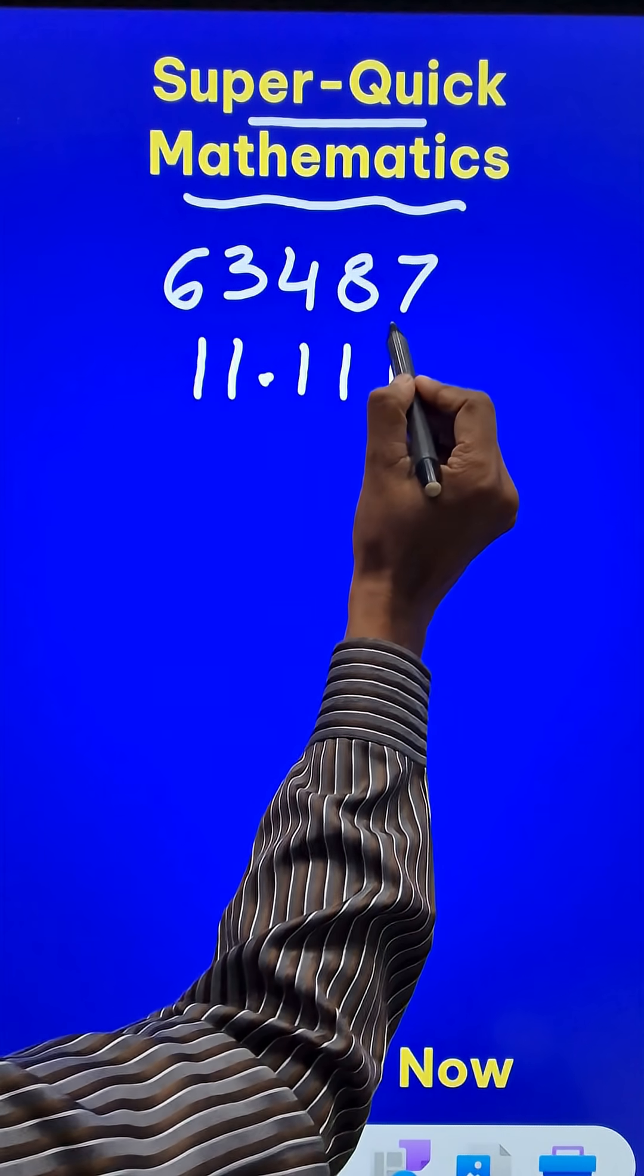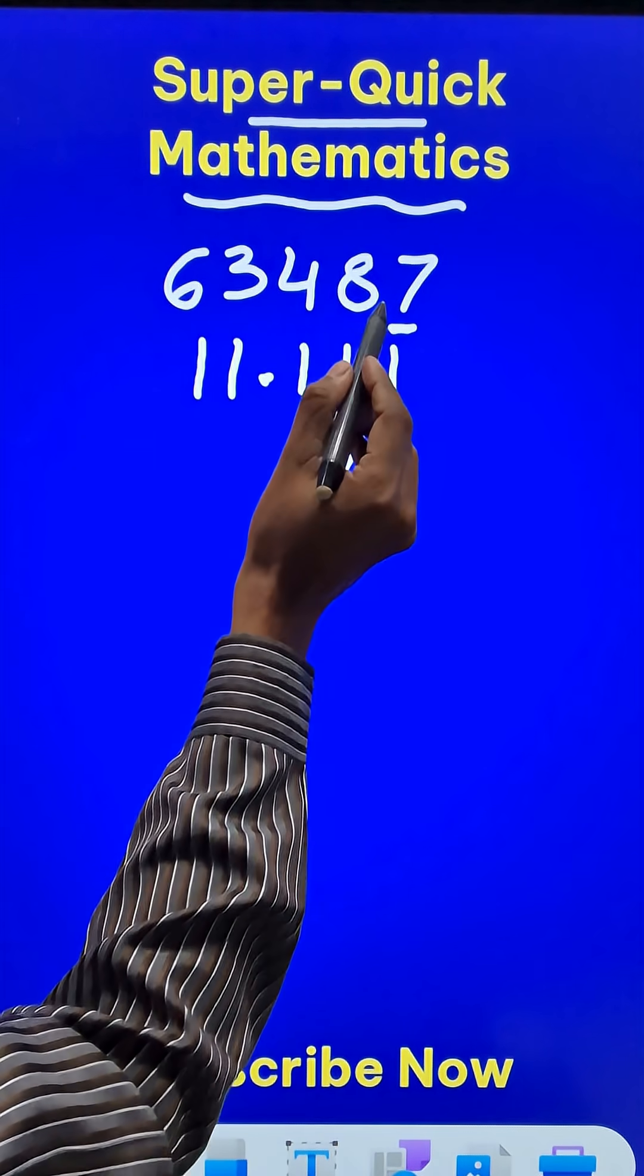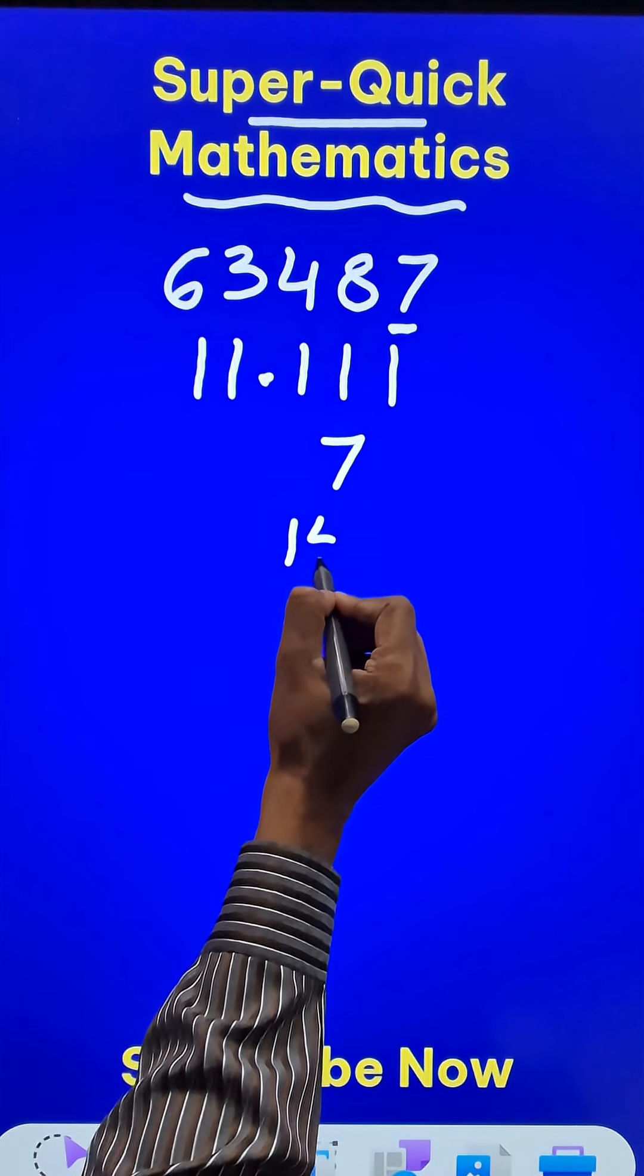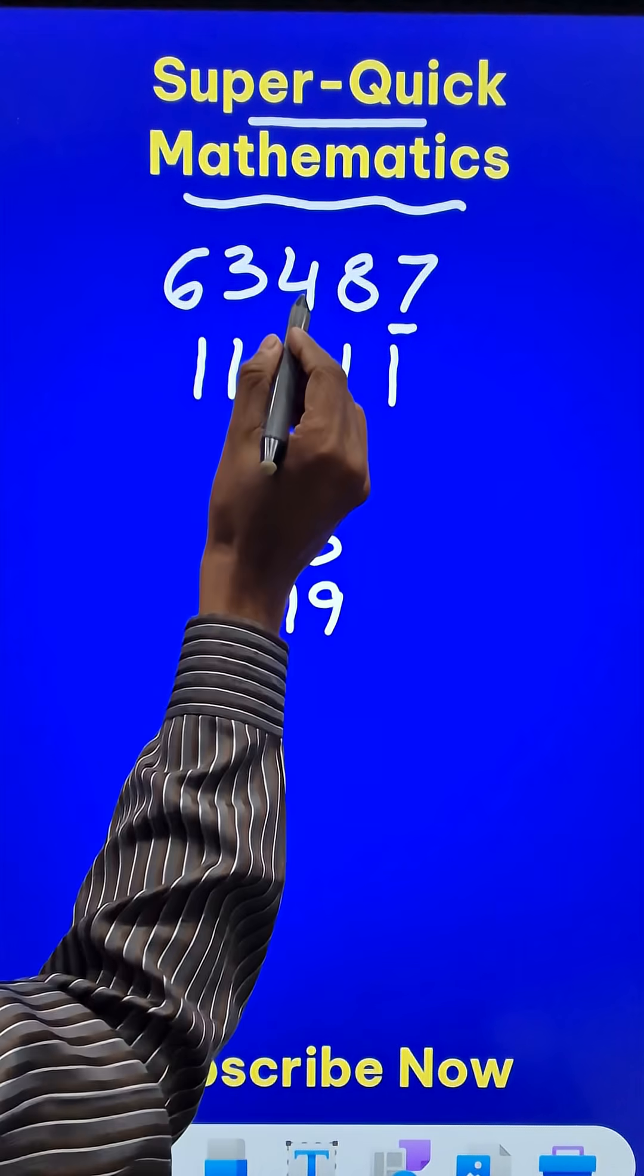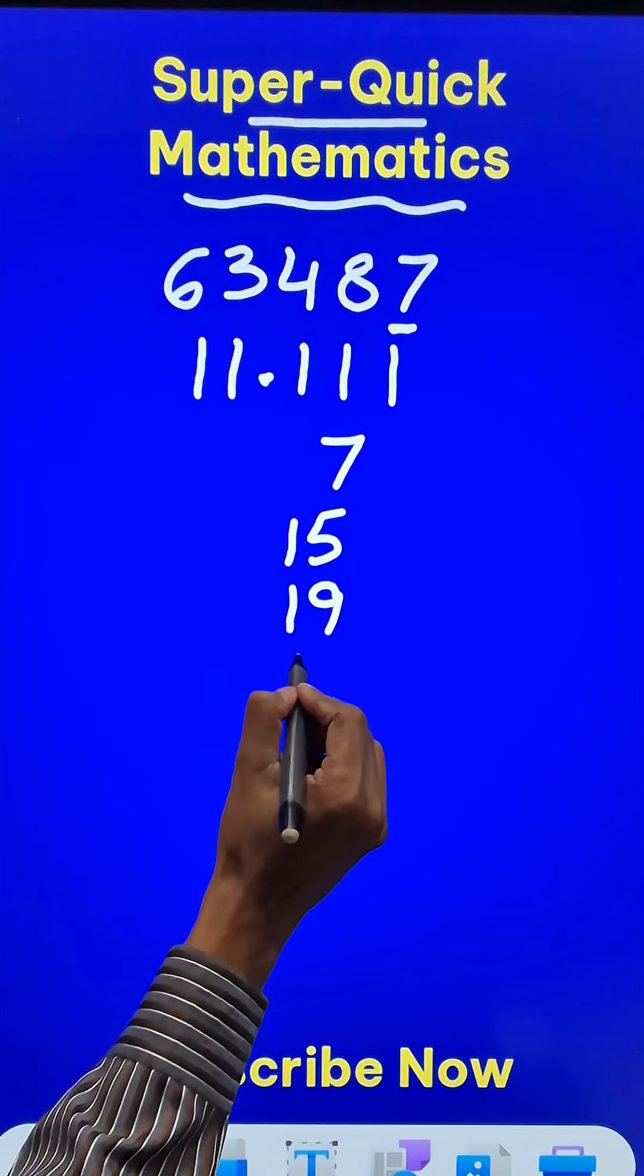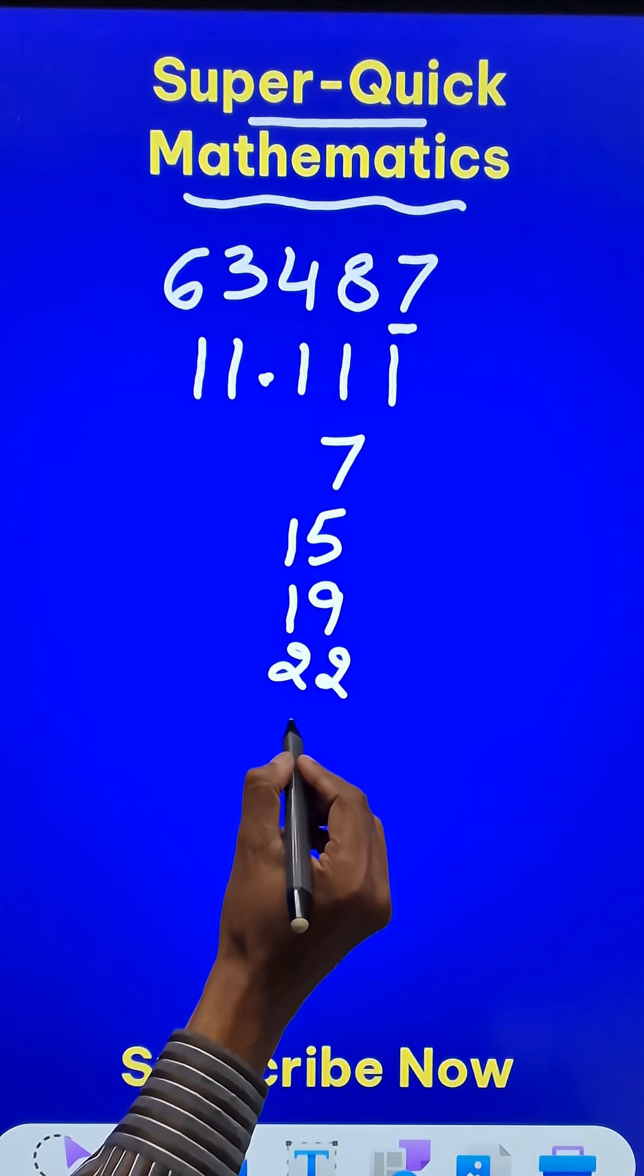So we will start with the unit digit here, 7, and then keep on adding the next one. 7 plus 8 we write 15, then 15 plus 4 we have 19, 19 plus 3 we have 22, and then 22 plus 6 we have 28.